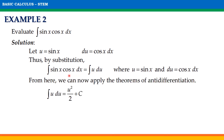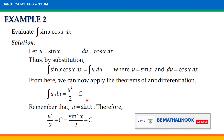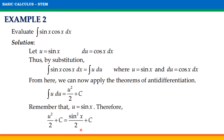From here, we can now apply the theorems of antidifferentiation. The antiderivative of u du is equal to u squared divided by 2 plus the constant c. Since our u is equal to sine x, substituting back, our final answer is sine squared x divided by 2 plus c.